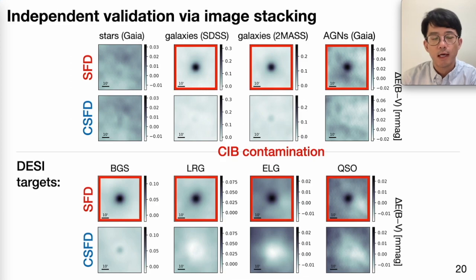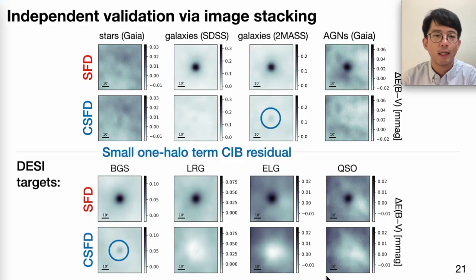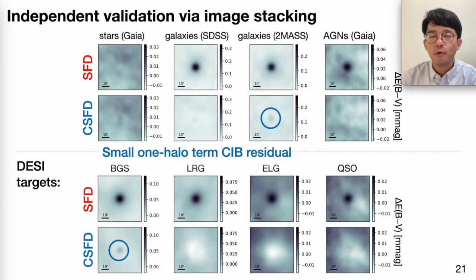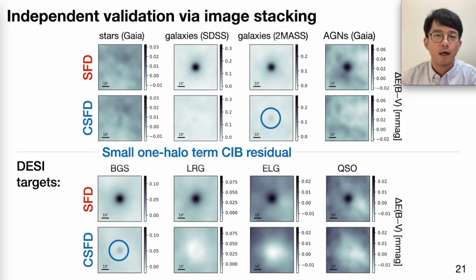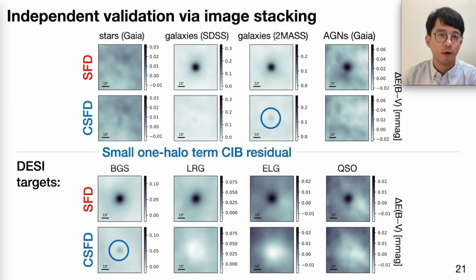In the new CSFD dust map, the CIB contamination is mostly gone. There is, however, a small but non-zero residual — for example, in the 2MASS galaxy stack and the BGS stack in CSFD. As it turns out, my procedure completely removes the two-halo term CIB clustering, but there is a small one-halo term residual that cannot be perfectly removed, because we simply have not resolved the CIB directly in the far infrared. That is the origin of this small residual.